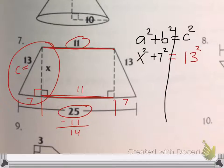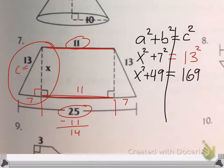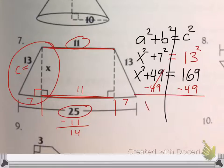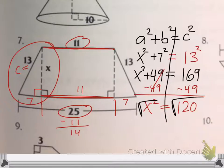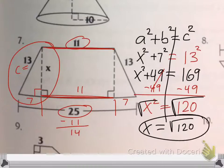And the rest we've been doing a lot. So 7 squared is 49, 13 squared is 169. And then you subtract 49 and you get x squared equals 120. And then square root it, you get x equals the square root of 120. I don't have a calculator right now, so that's going to be good enough.